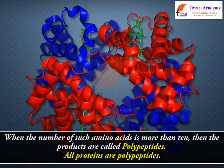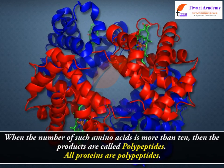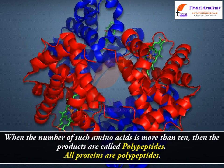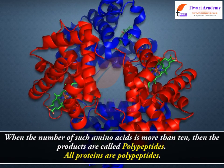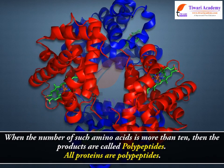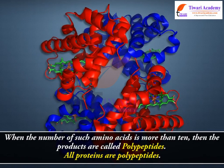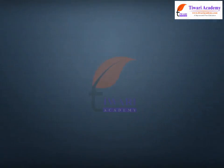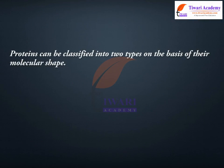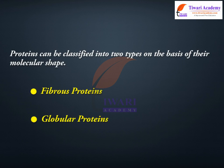When the number of such amino acids is more than 10, then the products are called polypeptides. All proteins are polypeptides. Proteins can be classified into two types on the basis of their molecular shape: fibrous proteins and globular proteins.